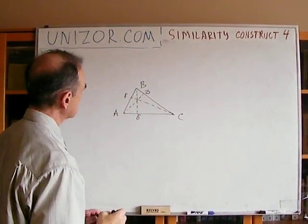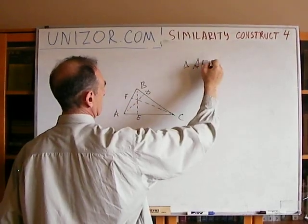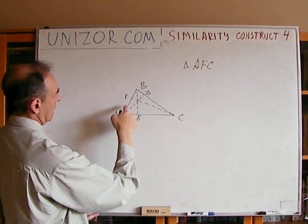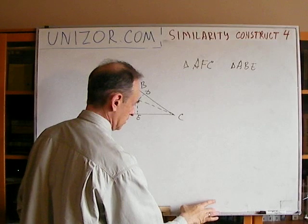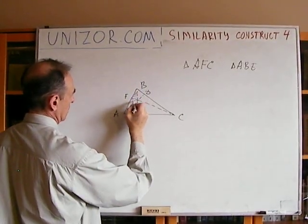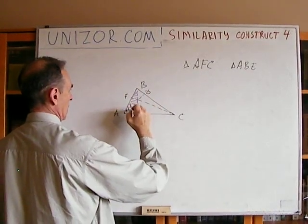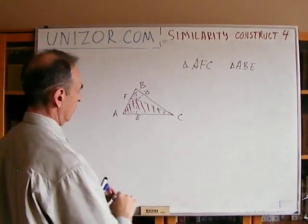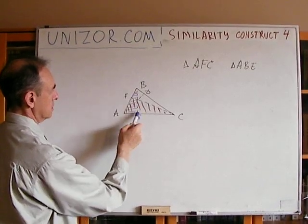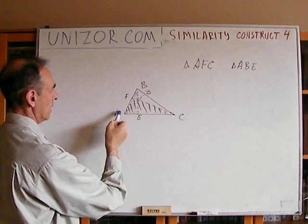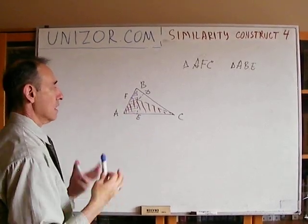Consider triangle DEF. Let's look at triangles AFC and ABE. It's quite obvious these two triangles are right triangles, because these are altitudes — so angle BEA is 90° and angle CFA is 90°. More than that, they share the same angle: angle BAC is the common angle for both triangles, which means they are similar.